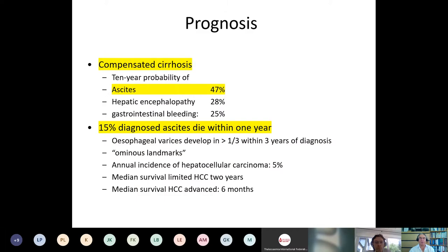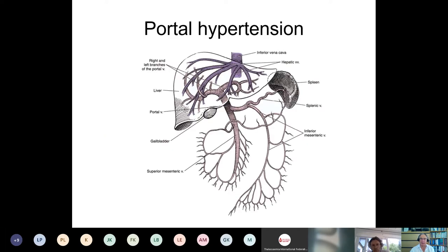The prognosis of cirrhosis is disturbing. About 47% of patients will develop ascites, 28% encephalopathy, and 25% a GI bleed within 10 years. Around 15% of patients with ascites will die within one year — all marks of decompensated cirrhosis. The annual incidence of liver cancer is around 5%, depending on setting and etiology, and median survival for HCC is very limited, especially if advanced when diagnosed.